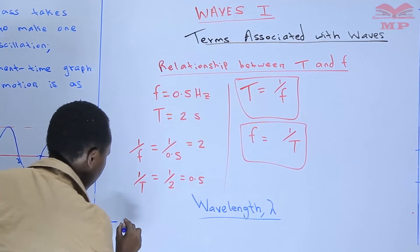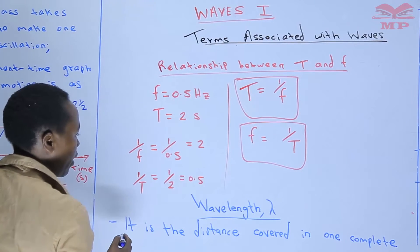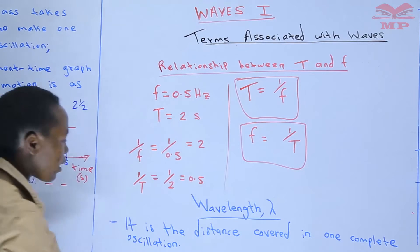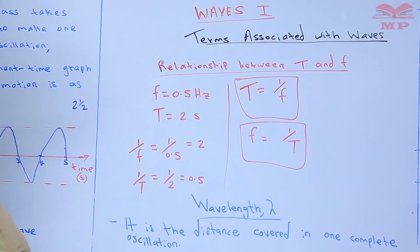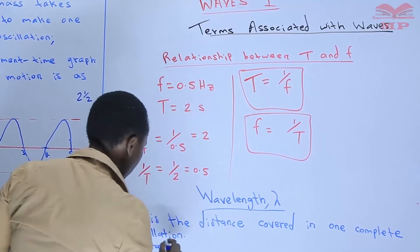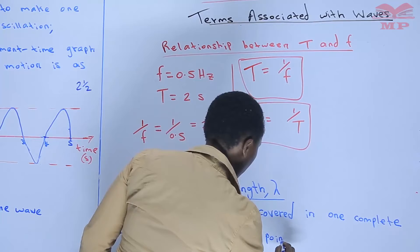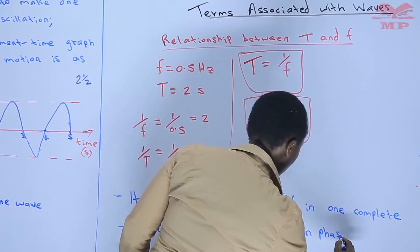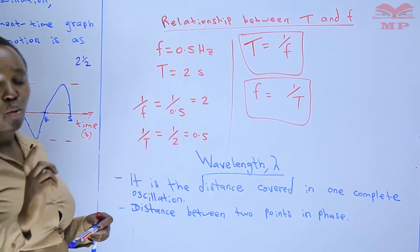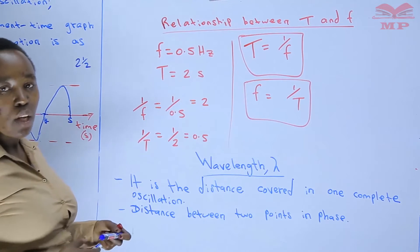We are saying that this is the distance — we are going to give several definitions. This is the distance covered in one complete oscillation, or we can say that it is the distance covered between two points which are in phase. We can also say that it is the distance between two successive crests, or two successive troughs, or even two successive rarefactions, or two successive compressions.